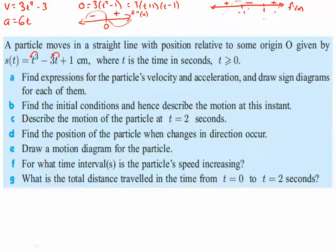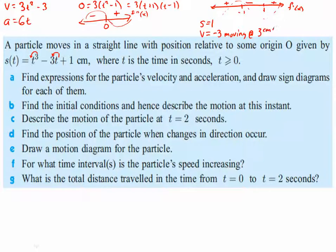Now find the initial conditions — that is, when time equals zero. Substituting t = 0: s = 1, meaning the particle is one centimeter to the right of the origin. Velocity at t = 0: 3(0)² − 3 = −3, meaning it's moving at three centimeters per second to the left. Acceleration at t = 0: 6(0) = 0, meaning the particle is not speeding up or slowing down — the velocity is instantaneously constant.